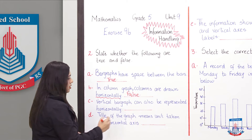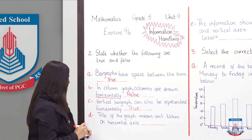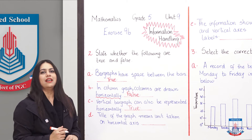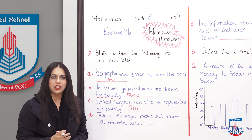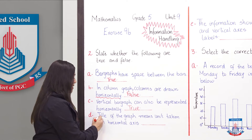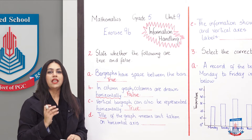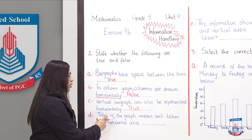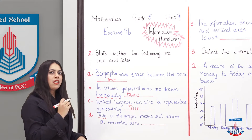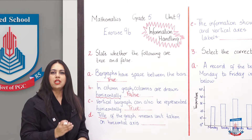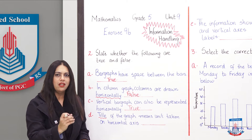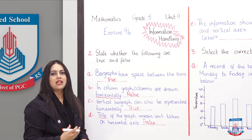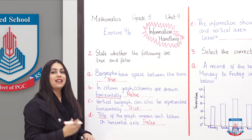Part D: 'The title of the graph means the unit taken on the horizontal axis.' If you remember, we studied the components of a graph in detail, including the title. The title is the thing that tells you what the graph is about. When you draw a graph it has an x-axis and y-axis — do you think the title is the label on the x-axis? No, this statement is FALSE. The title actually tells you the topic or subject being discussed in the graph.